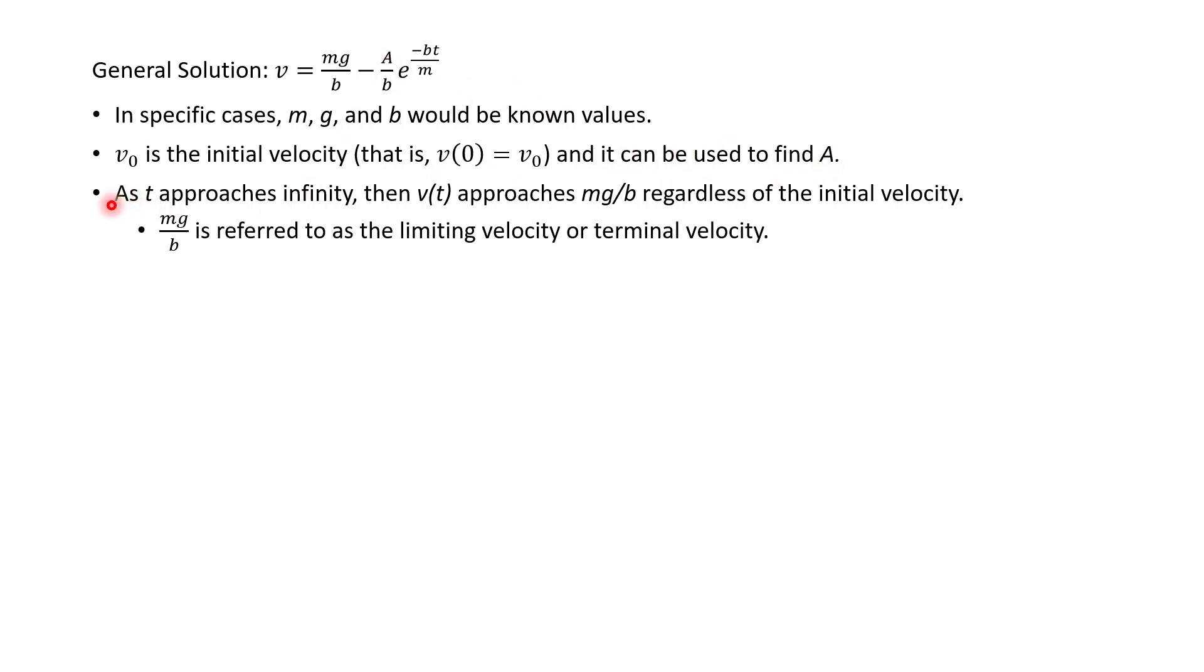And then last thing to mention, as t approaches infinity, then the velocity of t, v of t, actually approaches mg over b, regardless of the initial velocity. And so that's why this term, mg over b, is referred to as the limiting velocity, or also called terminal velocity. Okay, so that's it for this one, just a brief introduction to this idea.